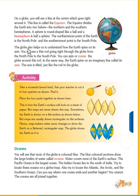The globe also helps us to understand how the earth spins on its own axis. The earth rotates on its own axis — it doesn't have any device to rotate; it spins on its own axis. That is how we get night and day. When the rays of the sun fall on one side of the earth it is day, and when they don't fall on that side it continues as night.